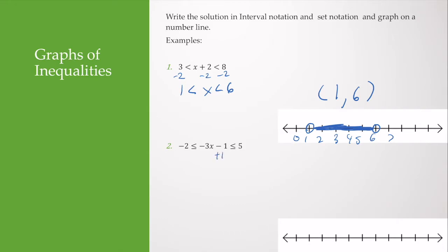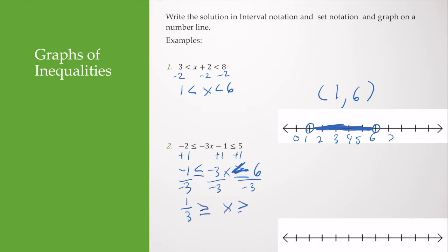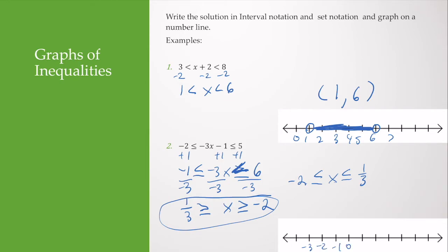Let's try another. I add 1 to all three parts, giving negative 1 is less than or equal to negative 3x, which is less than or equal to 6. Dividing by negative 3 and flipping the signs gives 1 third is greater than or equal to x, which is greater than or equal to negative 2. Rewriting, negative 2 is less than or equal to x, which is less than or equal to 1 third. Both endpoints are included, so the interval is bracket negative 2, 1 third bracket.